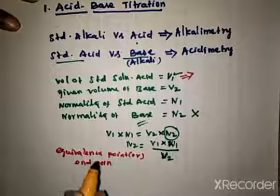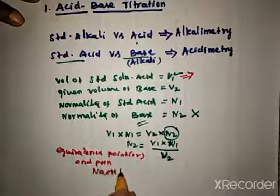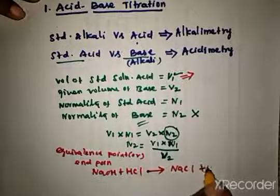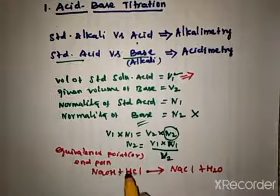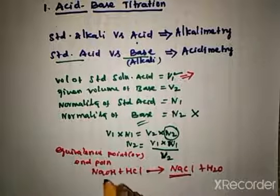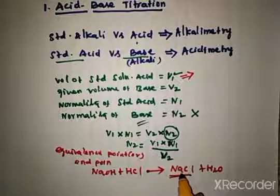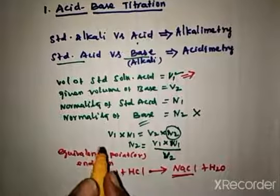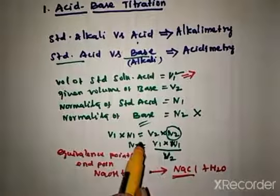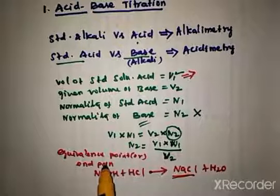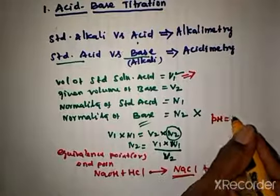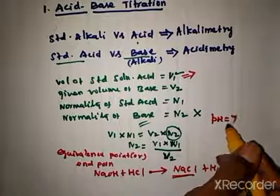At the end point, an aqueous solution of the corresponding salt is obtained. For example, in the titration between NaOH and HCl, sodium chloride salt and water are produced. For a strong acid versus strong base titration, the resultant solution at the end point will be neutral with pH equal to 7.